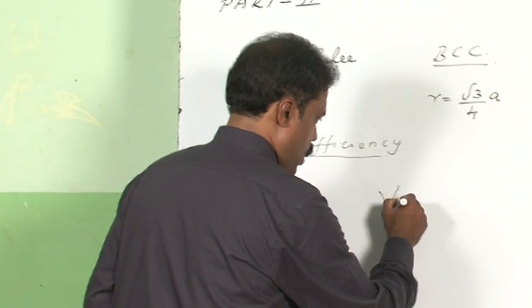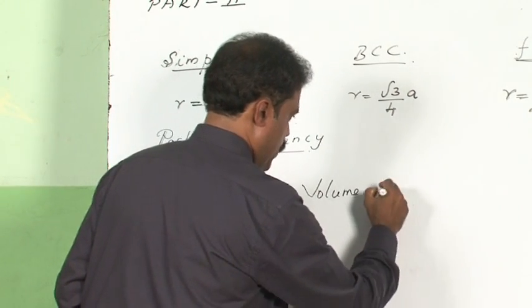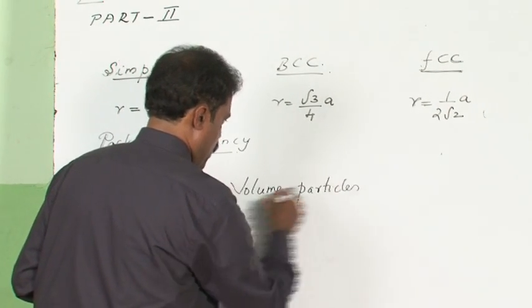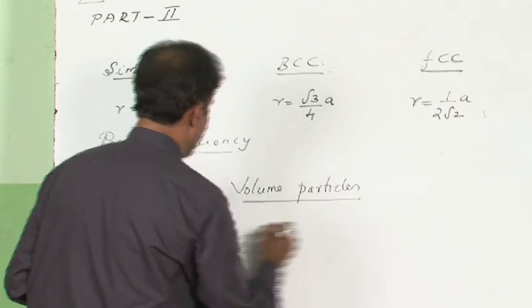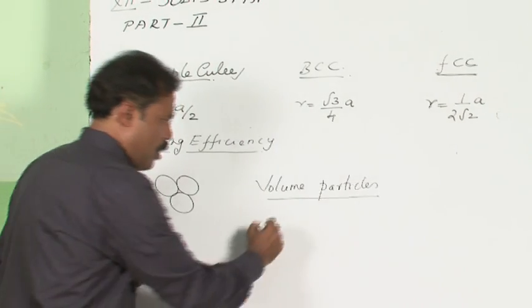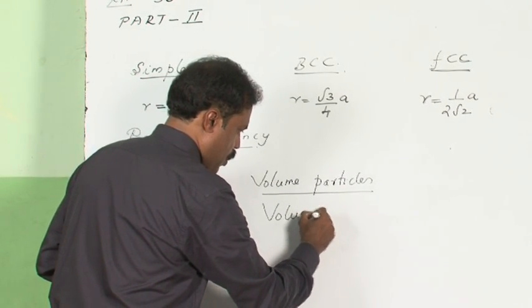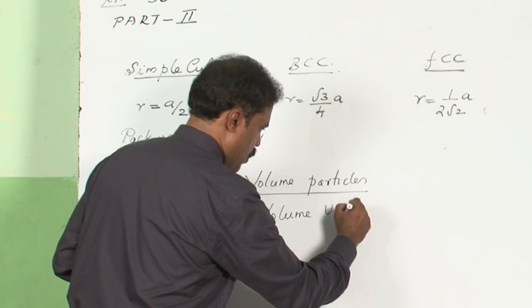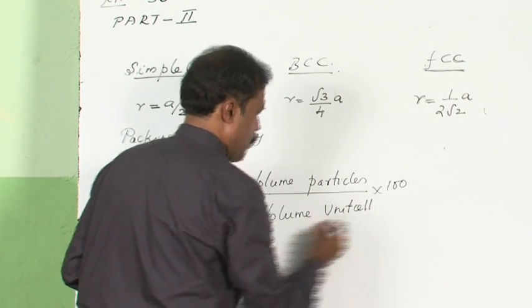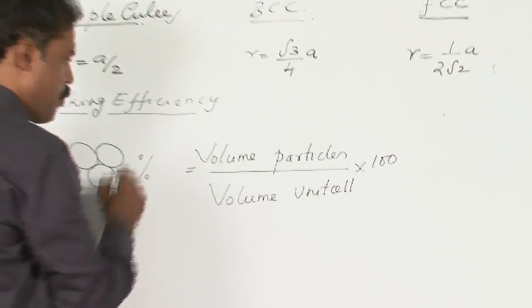You find out the volume occupied by the particles in a particular unit cell divided by the total volume of the unit cell, multiplied by 100. This should give you the efficiency of packing.